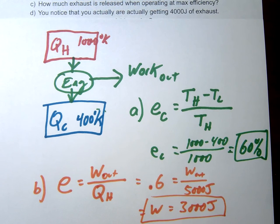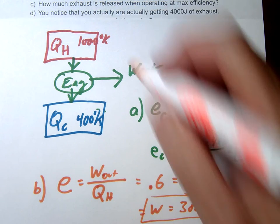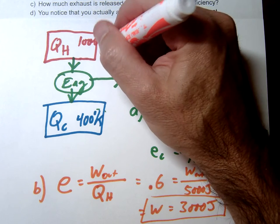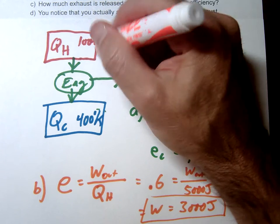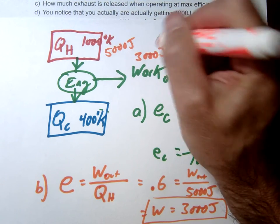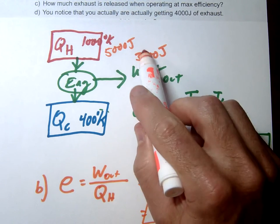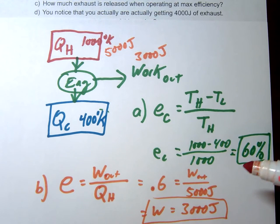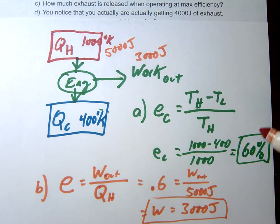So kind of conceptually, what we're showing here is we started with 5,000 joules up here, and then that turned into 3,000 joules of work, right? And so 3 over 5 is going to be 60%. That's what our efficiency is in this case.